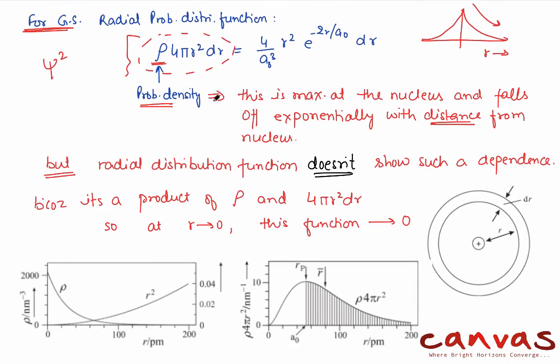There is exponential fall with distance from the nucleus. But we are not talking about probability density, we are talking about radial probability distribution function. This distribution function doesn't show such a dependence because it's not only dependent on probability density but also on this term 4πr²dr. So as your r value approaches 0, this 4πr²dr also approaches 0, so the whole function approaches 0. It cannot be maximum at the nucleus.